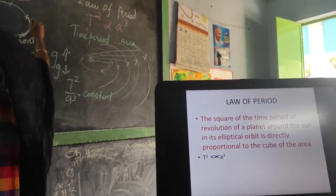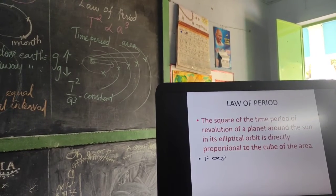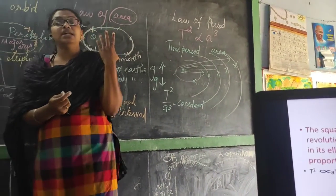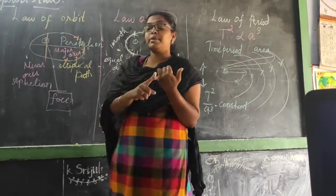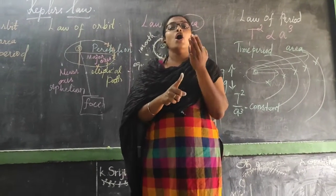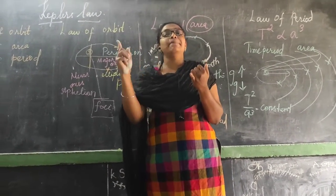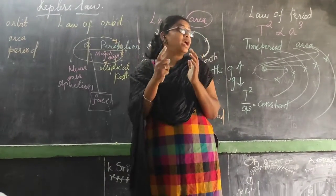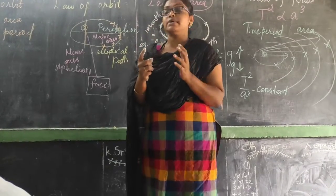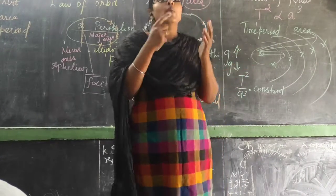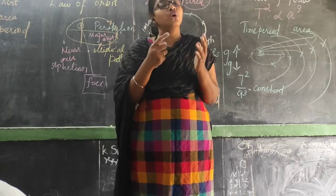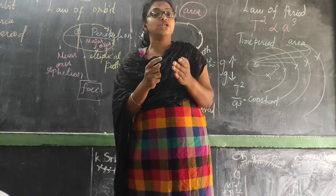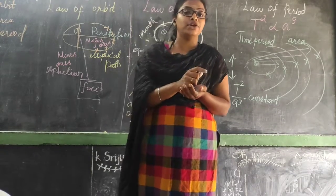So these are the three laws of Kepler. I started with Kepler's laws — there are three laws: law of orbit, law of area, and law of period. The law of orbit shows the sun at one focus and the planets revolving in an elliptical path. The law of area states it sweeps equal area in equal intervals of time. The law of period states the time period is directly proportional to A cubed. We also have the universal law of gravitation, which we can see in the next class. Thank you.